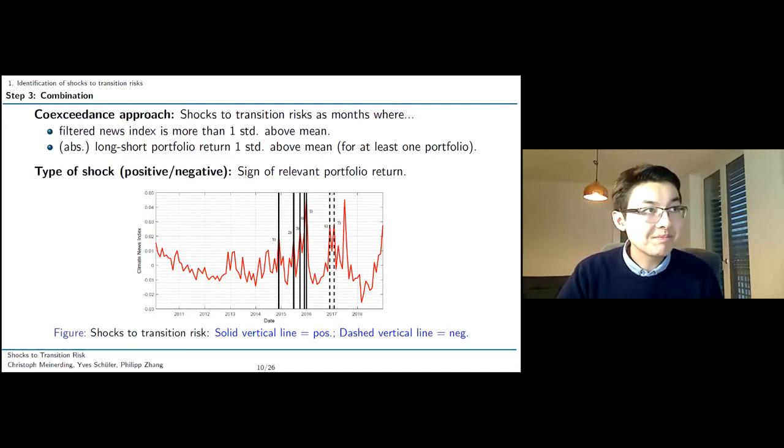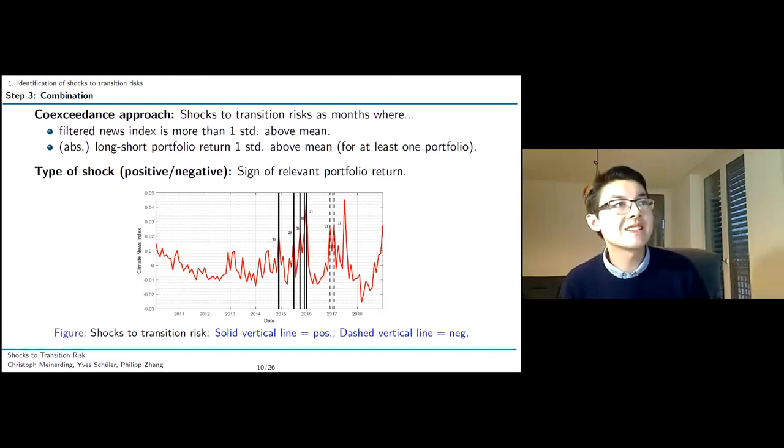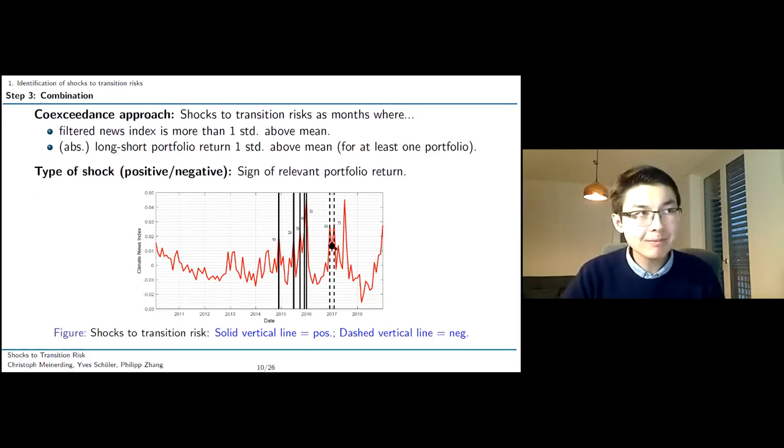How are they determined? This relies on a co-exceedance approach. We look at months where our filtered climate news index is one standard deviation above its mean. And we look at the months where, in at least one of our three portfolios, the returns are either one standard deviation above, or one standard deviation below the mean return. And we look simply at those months in which both the news index and the portfolios, something significant is happening. Something with more than a standard deviation for the news, or less or more than a standard deviation for returns. So kind of co-exceedance approach. And this gets us these seven shocks.